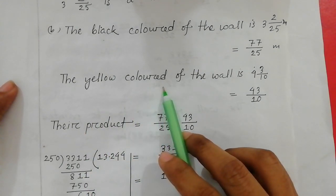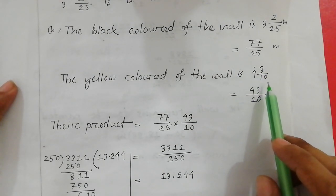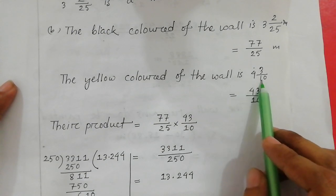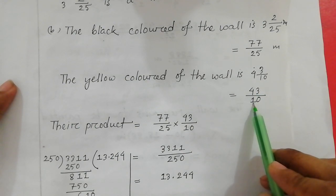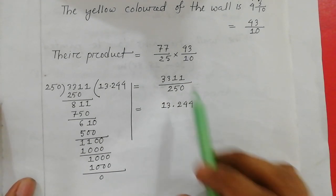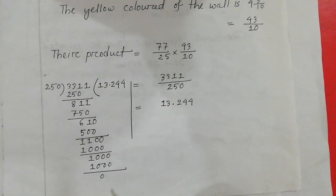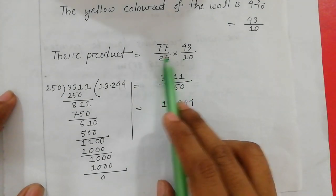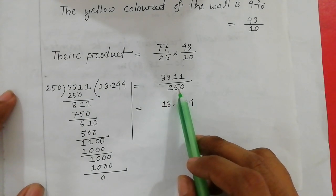The yellow color of the wall is 4 and 3/10. This is a mixed fraction. Converting to improper fraction: 4 times 10 is 40, add 3 to get 43/10. Then multiplying: 77/25 multiplied by 43/10 — numerators multiplied together and denominators multiplied together gives 3311 over 250.